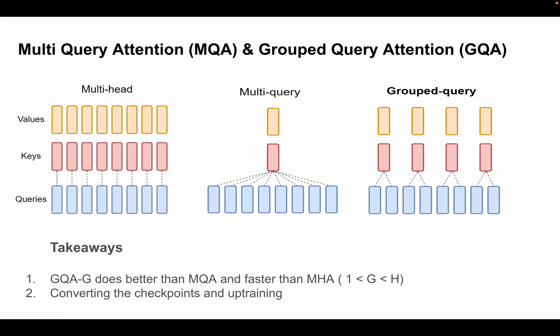As real-world examples: the PaLM model released by Google uses multi-query attention. More recently, almost every major model — Mistral, Gemma, and LLaMA (for the larger 34B and 70B variants) — follows grouped query attention. In short, GQA has become the new trend as model sizes grow, because of the inference challenges driven by bandwidth constraints. Other techniques like flash attention can also be combined to further increase inference speed.